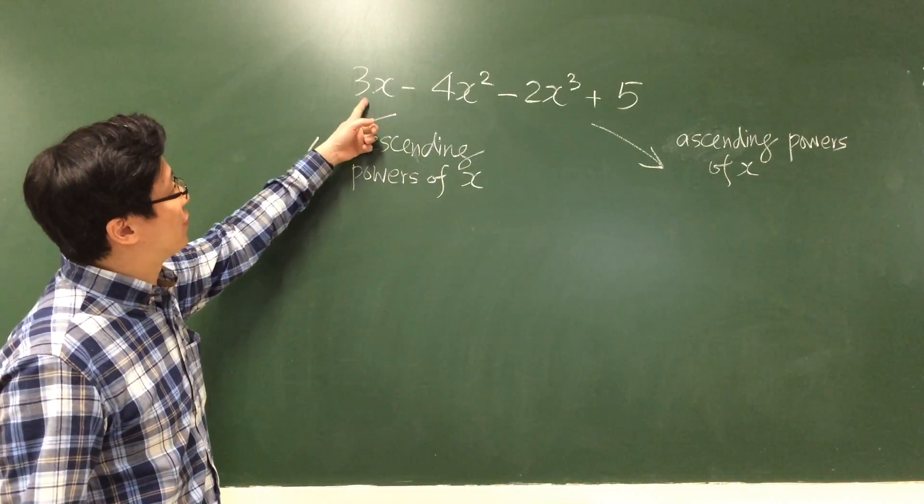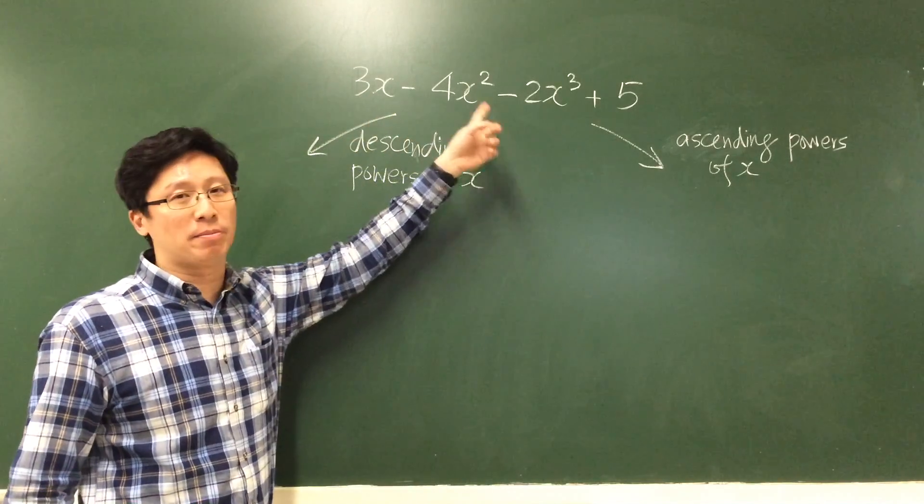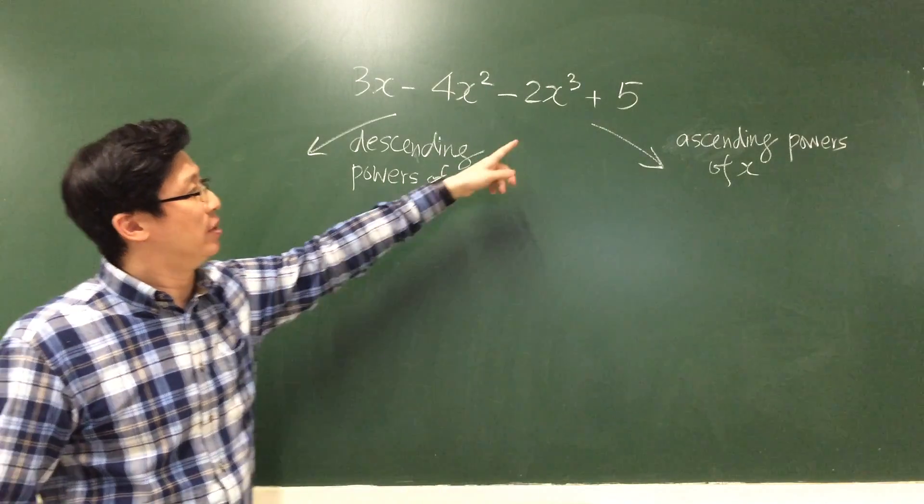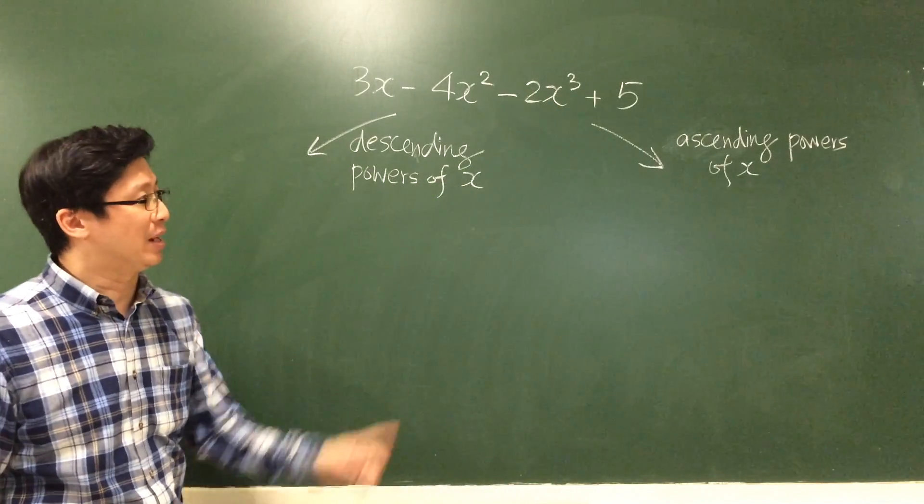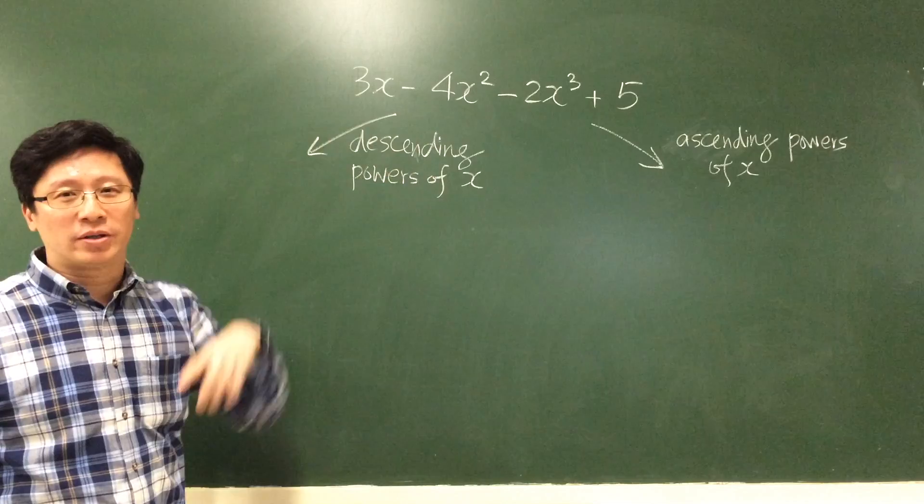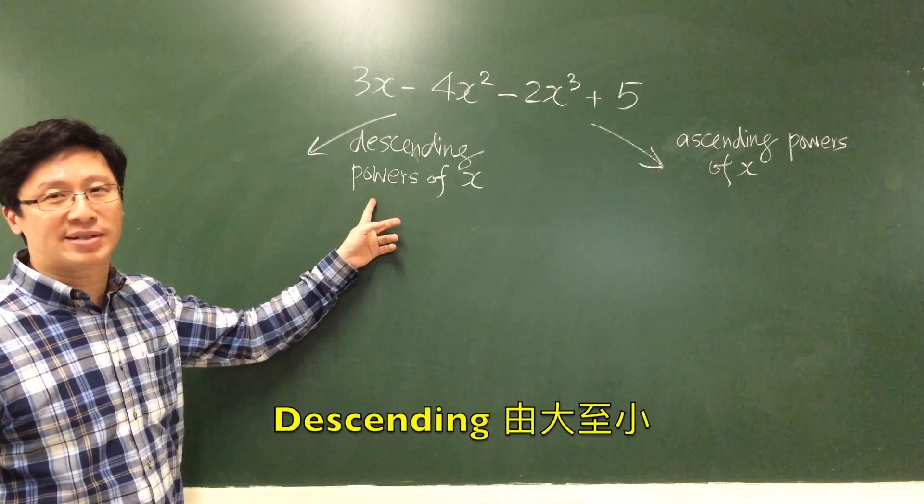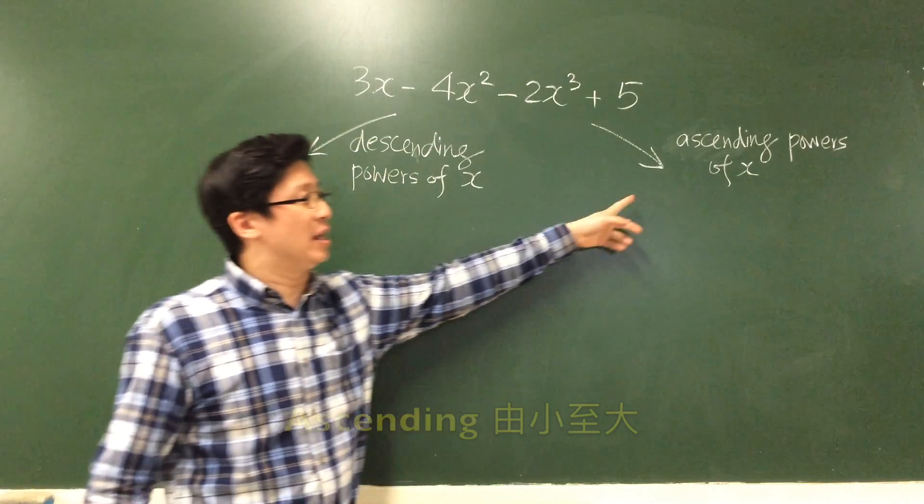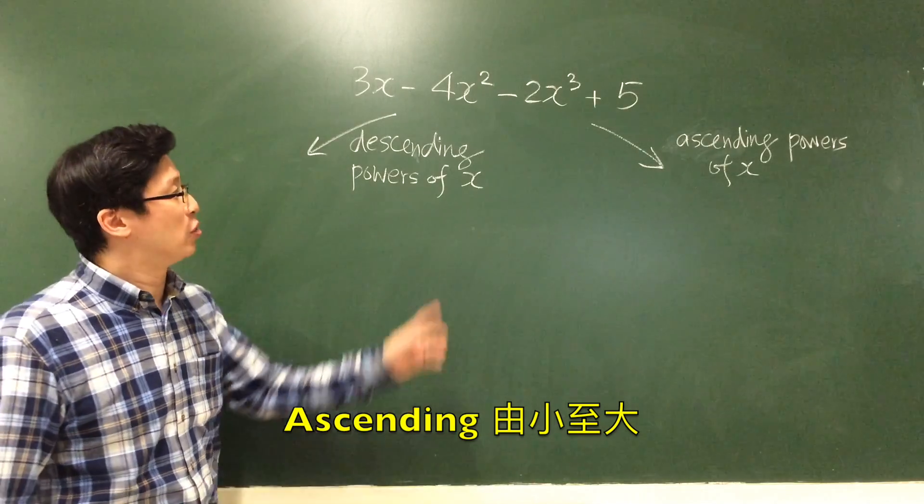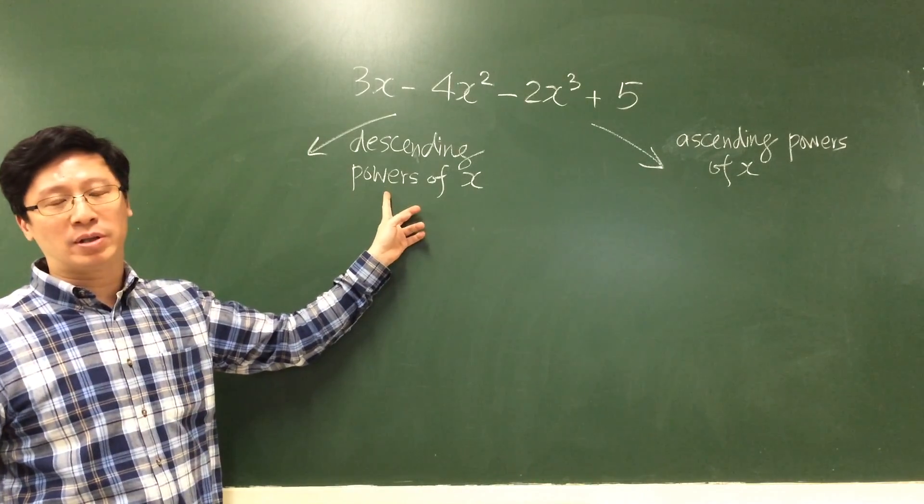Next we look at the expression 3x minus 4x squared minus 2x cubed plus 5, and we have to arrange it in descending powers of x and ascending powers of x. Usually we will choose the descending method.